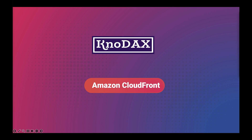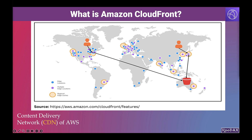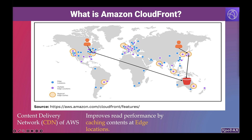This video is about Amazon CloudFront. Amazon CloudFront is AWS's content delivery network, also called CDN. Amazon CloudFront improves the read performance by caching contents at edge locations. The edge location is the data center that is nearest your users.